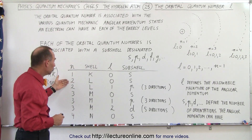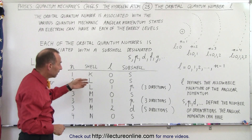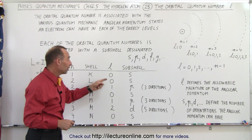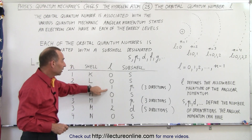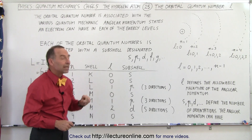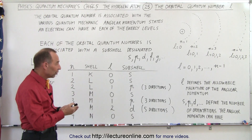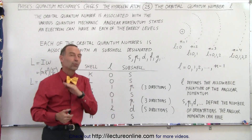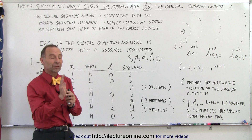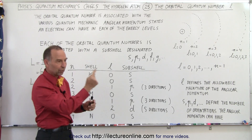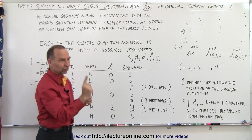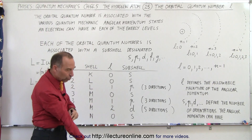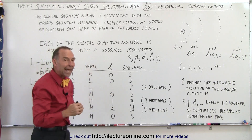When n equals 2 — that's the shell called L — the orbital quantum number can be 0 or 1. If it's 0, it's associated with sub-shell s. If it's 1, it's associated with sub-shell p. When l is equal to 1 and the sub-shell is p, there are three possible directions for the angular momentum. Remember, angular momentum is a vector, and as the electron rotates, the axis about which it rotates can have a certain direction. So when l equals 1, there can be three possible directions for the angular momentum.